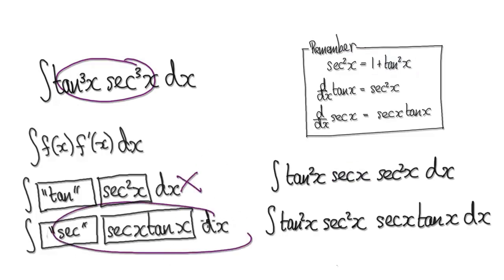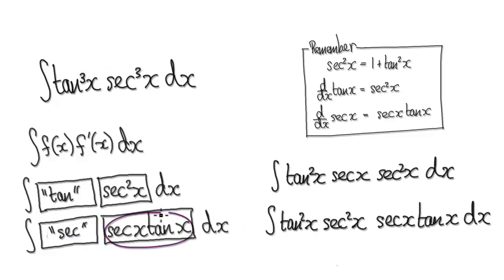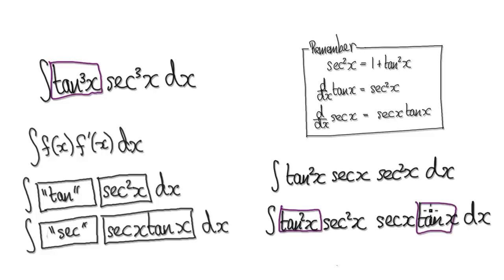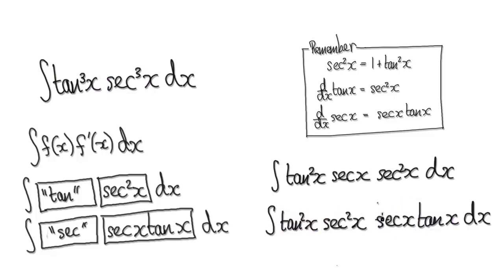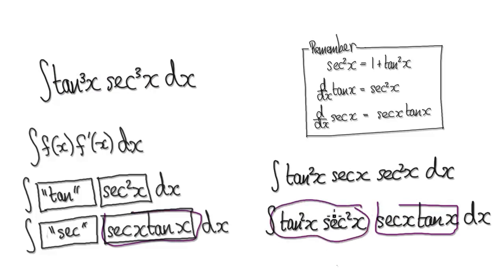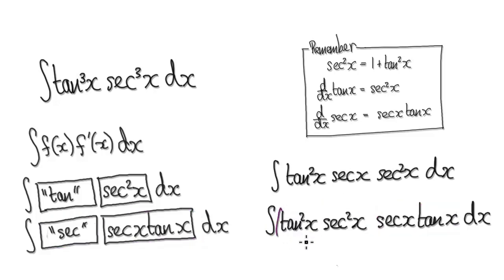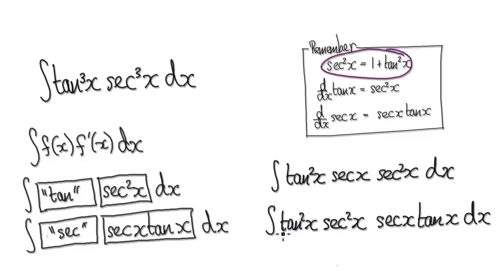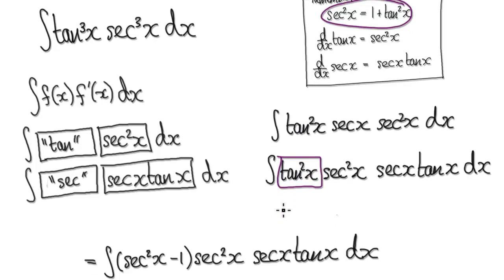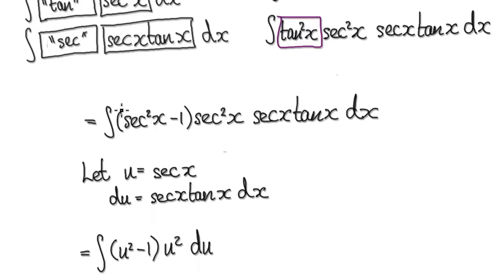So let's try and achieve this other form. We're trying to somehow get this thing from these two blocks. So let's imagine tan to the power of 3 as tan squared times tan — that gives us tan to the power of 3. And secant to the power of 3 is secant squared times secant. Now this tan squared is to the power of an even number, so we can make use of the identity and turn this block into a secant block, turning this block into this block here.